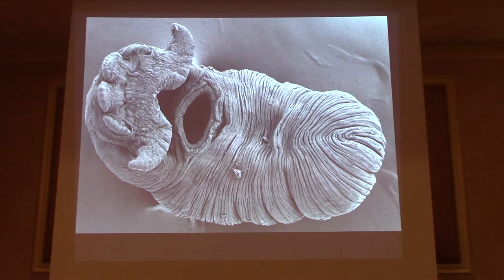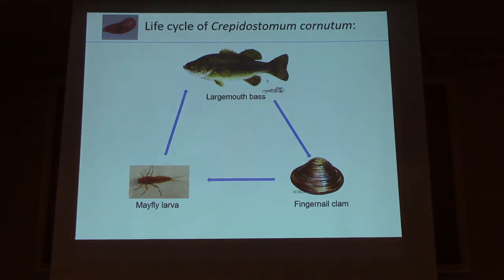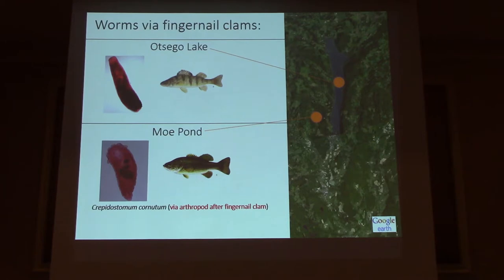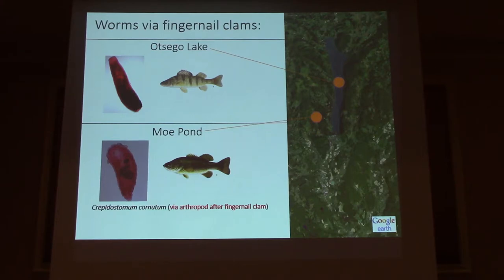Crepidostomum — affectionately called 'Boris' in my lab — is a trematode about a quarter to half a millimeter, with a life cycle where fingernail clams become infected, cercariae leave the clam and colonize mayfly larvae, and eventually reach the bass. We also have a trematode called Bunadera in yellow perch, which also utilizes fingernail clams as its first host. This confirms that native fingernail clam populations are still present in Otsego Lake — also confirmed by the malacologists at the station.